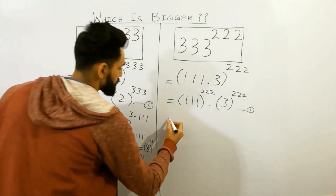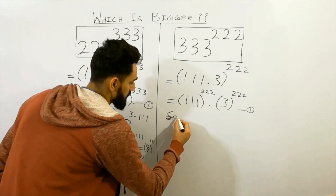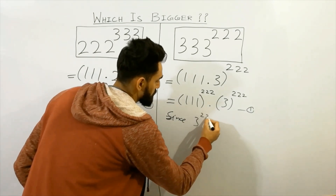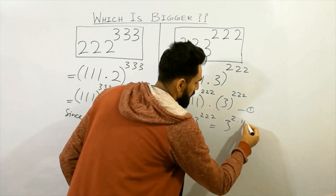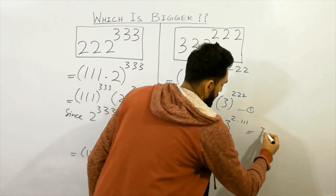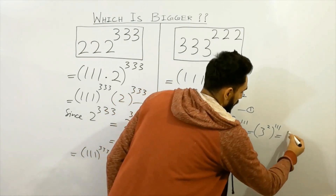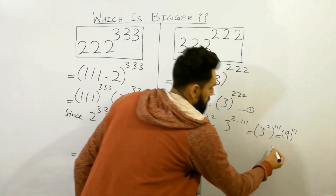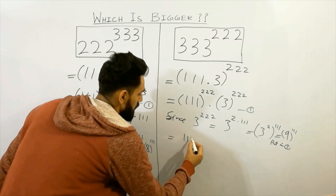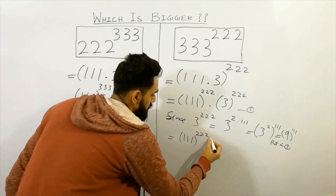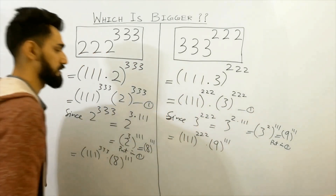Similarly, you can check here: since three raised to power two two, you can write three raised to power triple two — this can also be written as three raised to power two multiplied by triple one. Next, you can write three squared, which is nine, raised to power triple one. Put this value into equation number one, and you get the value nine raised to power triple one.